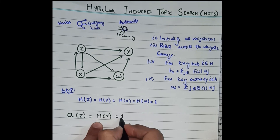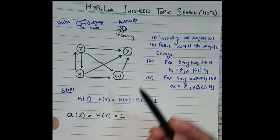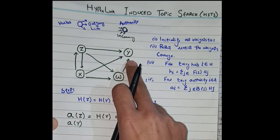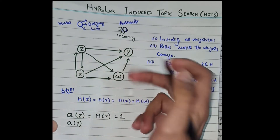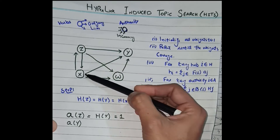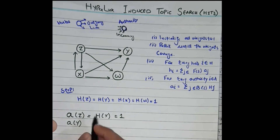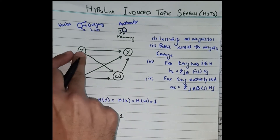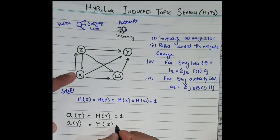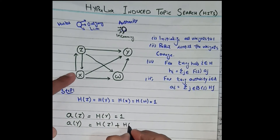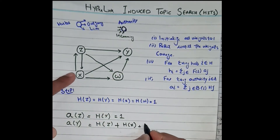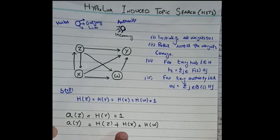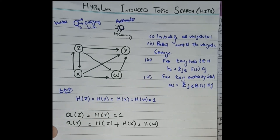What about the authority of Y? How many incoming links are coming to Y? There are three: from Z, from X, and from W. Authority is the sum of all relevant hubs, so authority of Y equals hub of Z plus hub of X plus hub of W. Authority is the sum of all hubs, and hub is the sum of all authorities.